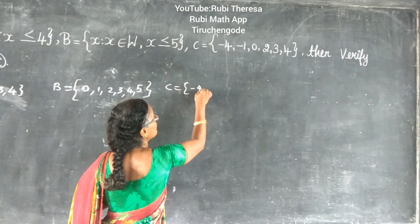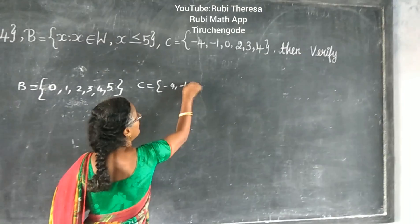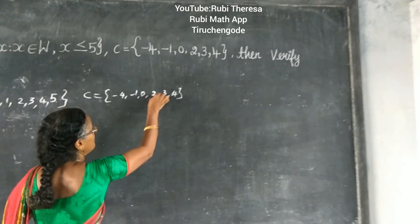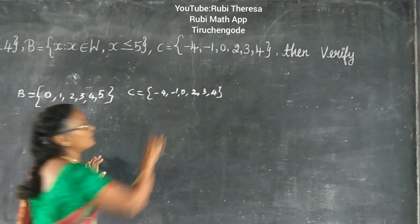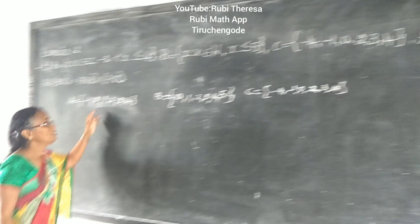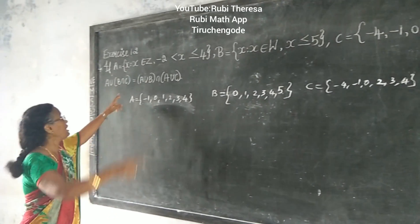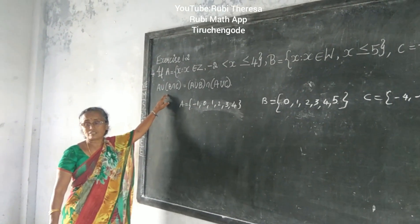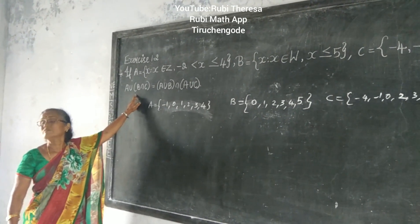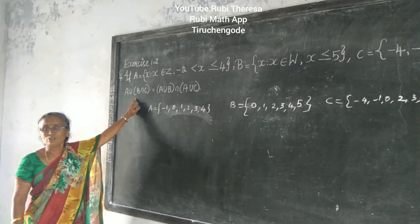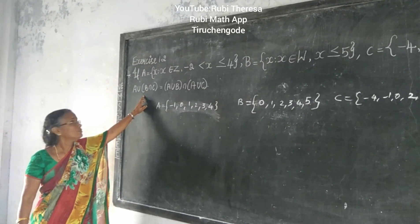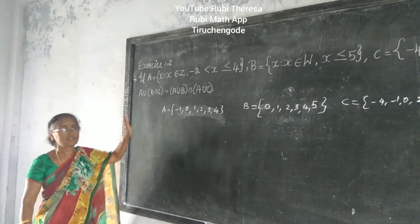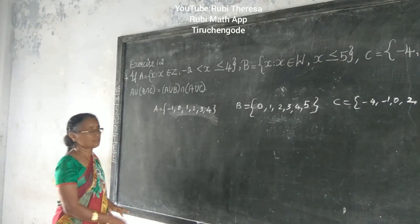Next one is C: minus 4, 0, 2, 3, 4. I will write it once again for counting and verify. What is the name of this property? Distributive property — very good. Distributive property: union over intersection. So we have to verify this.